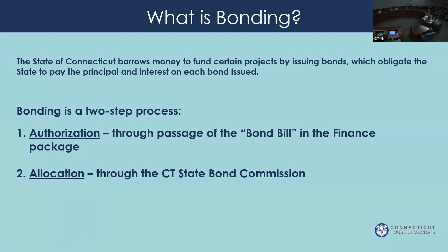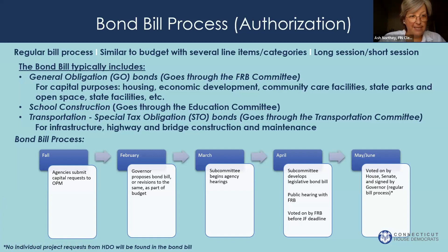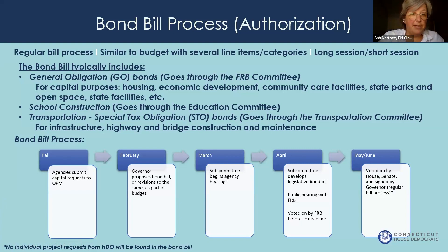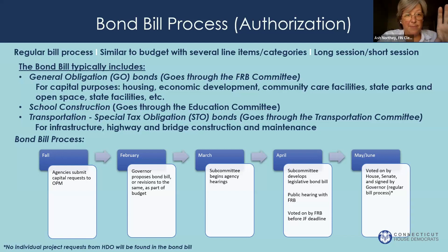Bonding is a two-step process: there's authorization and there's allocation. Authorization is through passage of the bond bill in the finance package, and allocation is through the state bond commission. The bond bill process — the authorization portion — is a regular bill process with a starting point and an end point, ending with the passage of the bond bill. The bond bill process typically includes what are referred to as GO bonds, which stands for general obligation bonds, and those go through the bonding subcommittee through the Finance, Revenue and Bonding Committee. Those are for capital purposes.